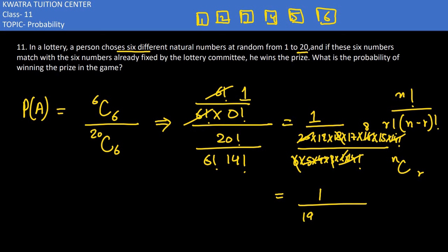Now what we have is 1 over 19 × 17 × 8 × 15. The value in the denominator is just multiplying all these values. So the final answer is 1 over 38,760. Is that alright?